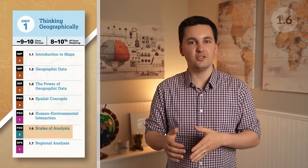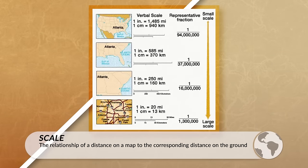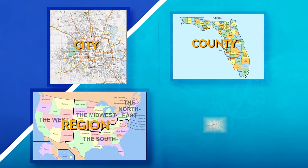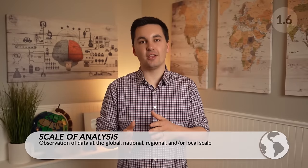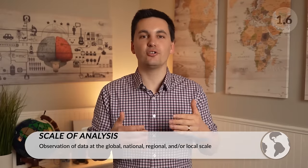Now we need to talk about scale and scale of analysis. Scale is the distance on a map in relation to the corresponding distance on the Earth's surface. There is a global scale, national scale, regional scale, and local scale. We can also look at sub-national or sub-state scales, which include a map of a city, county, region, or census tract — one of the smallest classifications of a geographic area. With scales of analysis, we're trying to understand how the information and data is being organized and presented.